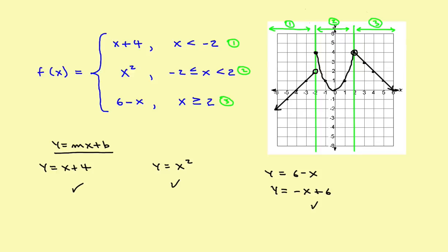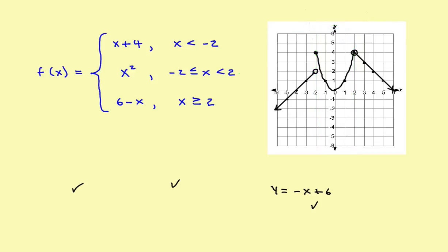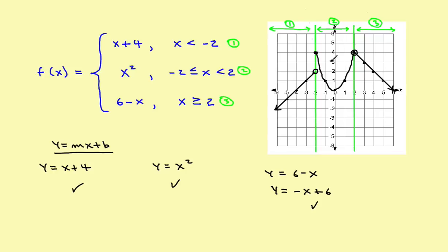With all three pieces graphed, you can turn off the interval dividing lines to see the final result. It helps to use those interval lines while working to keep the three sections organized. To summarize: graph each piece as a separate function, draw the complete line and erase what you don't need, and use a filled dot if the inequality includes an equal sign, or an open circle if it doesn't. That's how you graph piecewise defined functions — next we'll look at how to evaluate them.